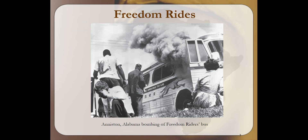The Freedom Rides were an effort in 1961 to desegregate interstate buses and trains. Integrated buses of activists traveled from Washington, D.C. to Louisiana and from Tennessee to Alabama. The passengers on these buses were met with an ugly, harsh, violent crowd of whites who resisted what was going on in the South.